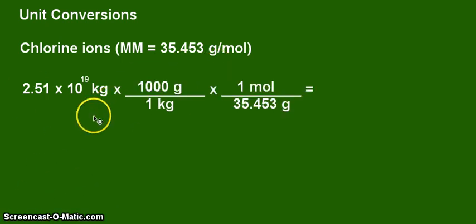Alright, so we have now outlined the solution, starting with the mass of chlorine ions in kilograms, which is 2.51 times 10 to the 19. So we need a conversion factor, which is here, and that is a very common factor that we have been using for many videos now. That's 1,000 grams is 1 kilogram, so as you can see, we can cancel the kilogram unit.